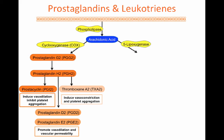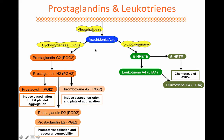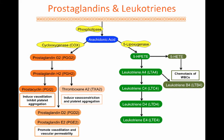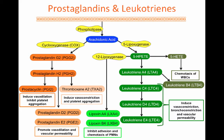Arachidonic acid can also be cleaved by 5-lipoxygenase to generate 5-hydroperoxyeicosatetraenoic acid. This can lead to the formation of hydroxyeicosatetraenoic acid, which causes chemotaxis of white blood cells. It can also lead to the formation of leukotriene A4, which in turn can create leukotriene B4, which also causes chemotaxis of white blood cells. Leukotriene A4 can also be converted to leukotrienes C4, D4, and E4, all of which induce vasoconstriction, bronchoconstriction, and vascular permeability. Finally, 12-lipoxygenase can generate lipoxin A4 and lipoxin B4, both of which inhibit adhesion and chemotaxis of polymorphonuclear leukocytes.